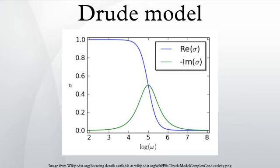The model, which is an application of kinetic theory, assumes that the microscopic behavior of electrons in a solid may be treated classically and looks much like a pinball machine, with a sea of constantly jittering electrons bouncing and rebouncing off heavier, relatively immobile positive ions.